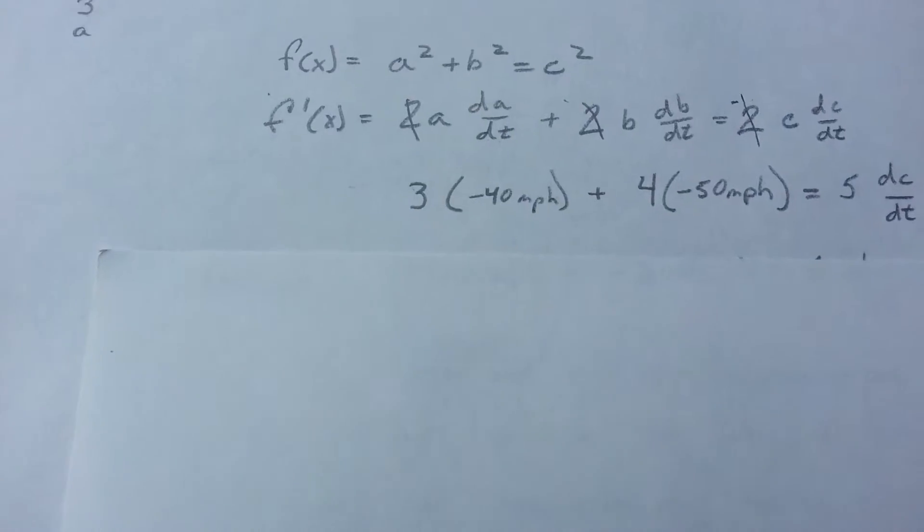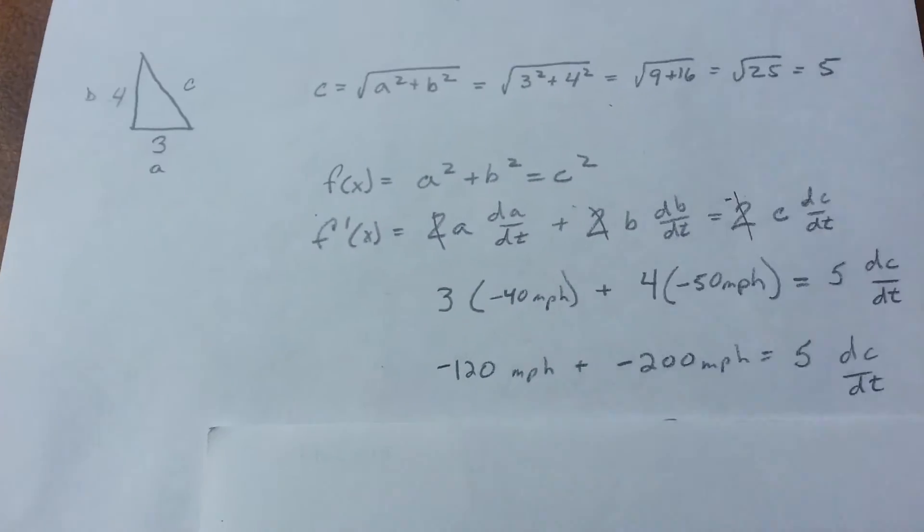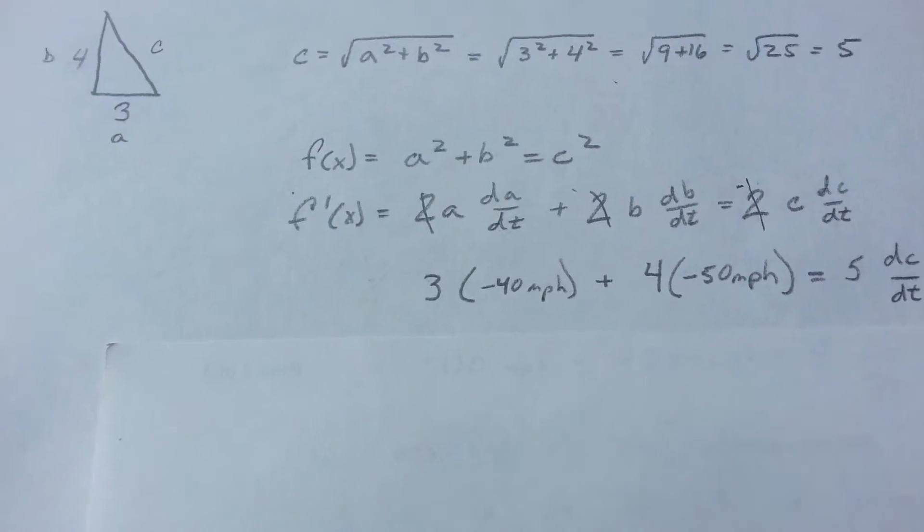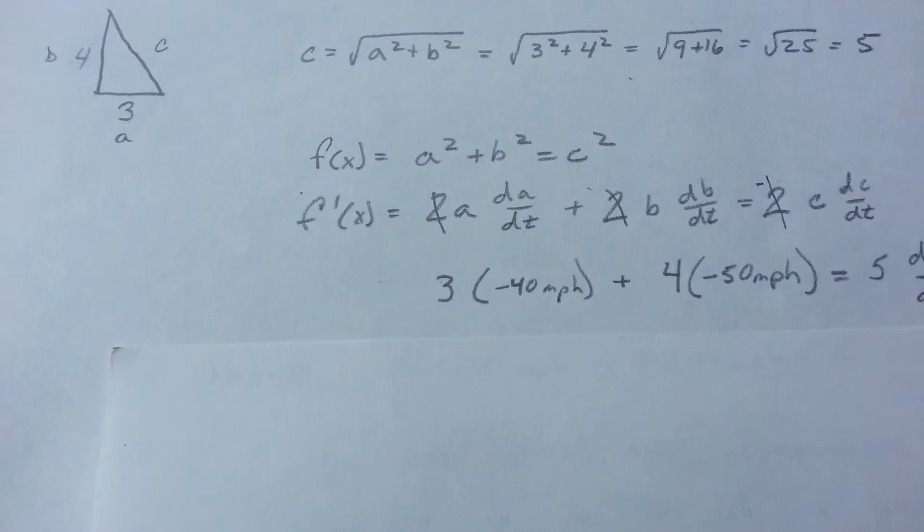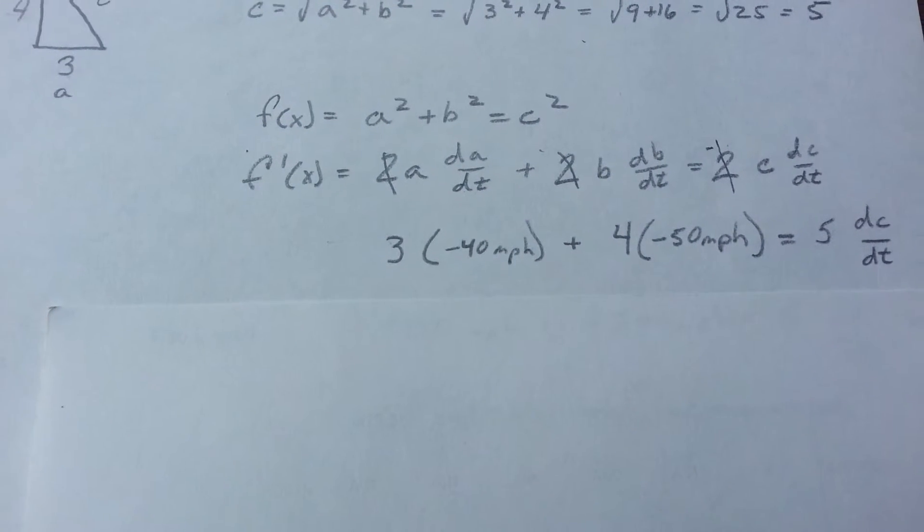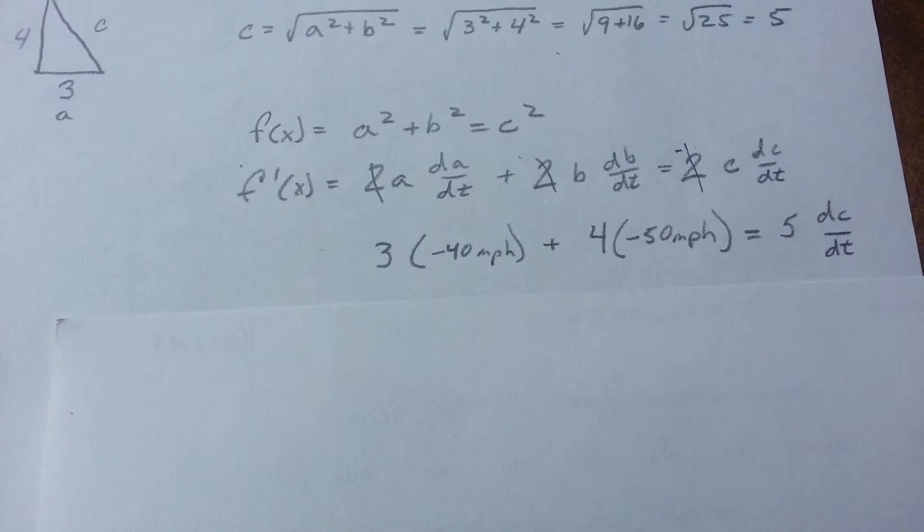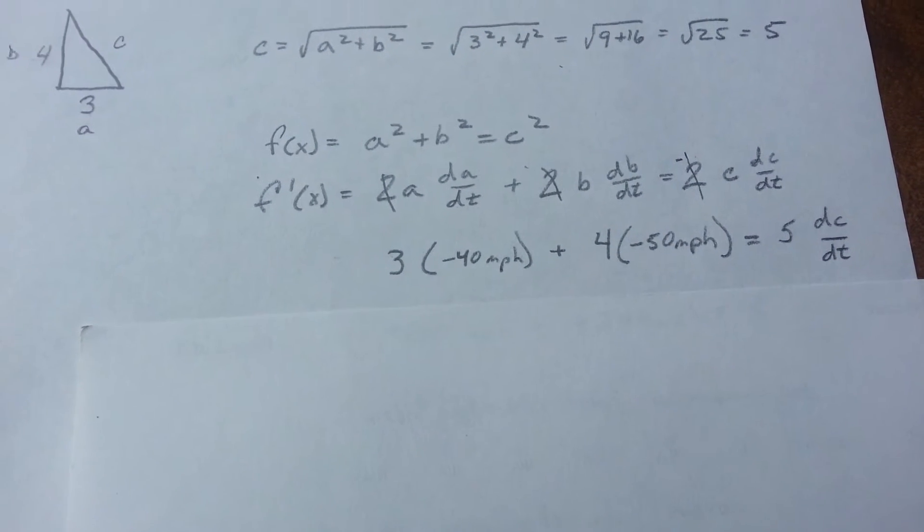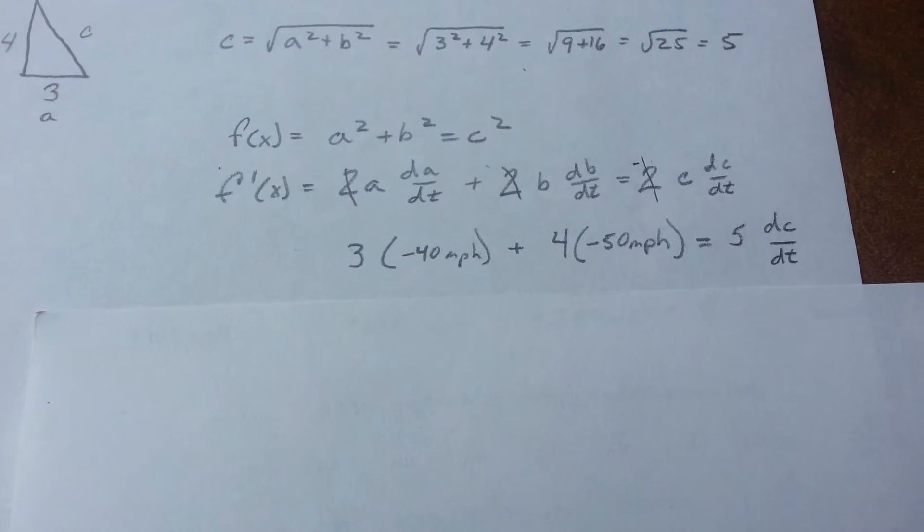Now we can plug in our numbers. 3 is our A, traveling at 40 miles an hour, so we'll put a negative 40 miles an hour. B would be our 4, traveling at 50 miles an hour equals our C, which we've come up with 5, and we're still trying to find the dC over dt.